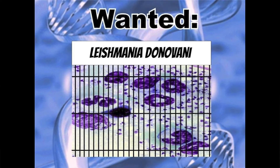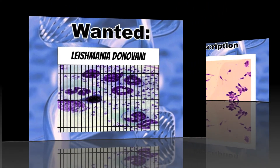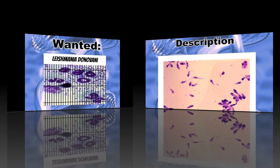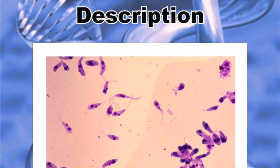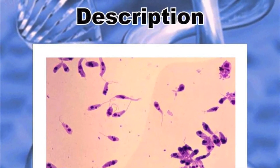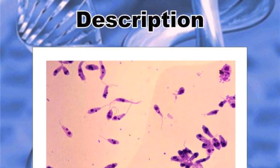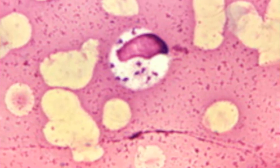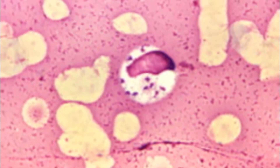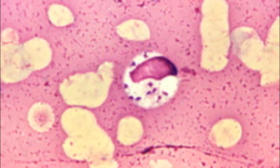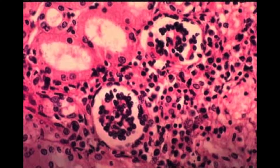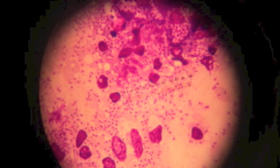Leishmania donovani — a single-celled parasitic protozoa and the causative agent of fatal visceral leishmaniasis — resides in macrophages within a mammalian host.